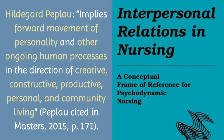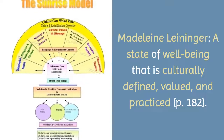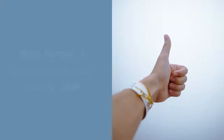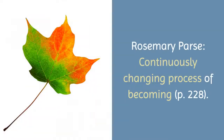Peplau defined health as forward movement of personality and other ongoing human processes in the direction of creative, constructive, productive, personal, and community living. Leininger said health was a state of well-being, but one that is culturally defined, valued, and practiced. Pender defined health as a positive high-level state. Rosemary Parse defined health as a continuously changing process of becoming — where her theory is the Theory of Human Becoming.